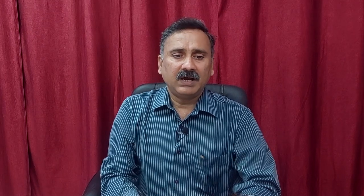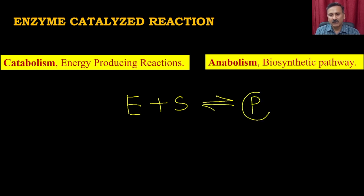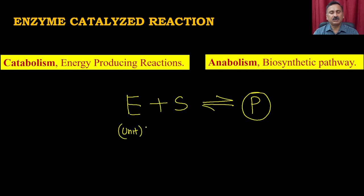When we talk about enzyme activity, this means the enzyme is processing the substrate and in that process generating the product. If you want to measure enzyme activity, one classical way is to express it in units, where every unit is defined as the amount of enzyme required to convert one micromole of substrate into the product in one minute.